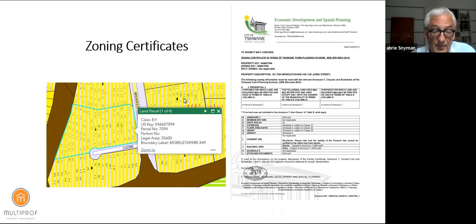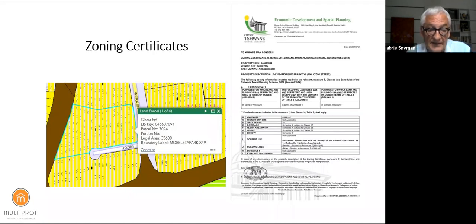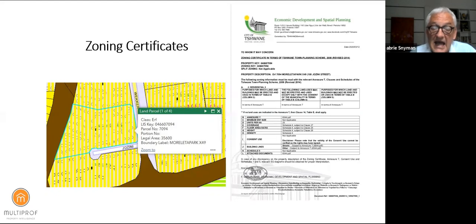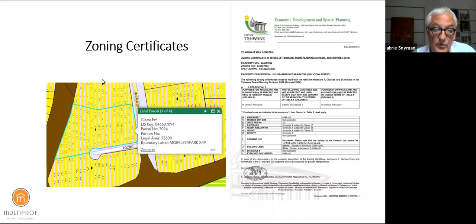It is of utmost importance that a managing agent as well as the body corporate have a copy of the zoning certificate, because that is part of what one needs when looking at approving additions and alterations.